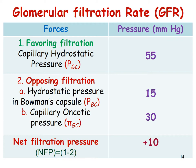The favoring force for filtration is called the capillary hydrostatic pressure — in other words it is the blood pressure at the level of the capillaries in the Bowman's capsule — and it is around 55 millimeters of mercury.